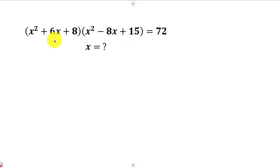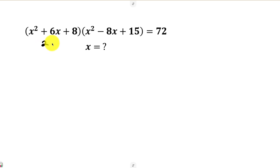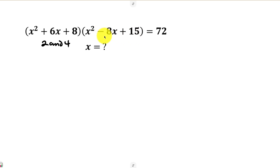For the first quadratic expression, we'll look for numbers that multiply to 8 and add up to 6. The numbers I have in mind are 2 and 4. For the second quadratic expression, we'll look for numbers that multiply to 15 and add up to negative 8. The numbers I have in mind are negative 3 and negative 5.